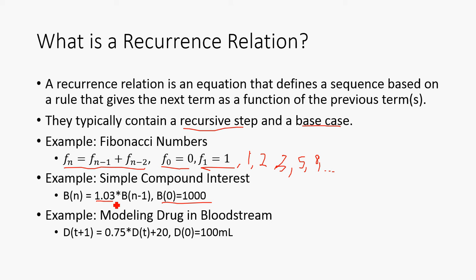And then our rule for simple compounding interest would be B_n = 1.03 * B_(n-1). In other words, the next payment is going to be 3% higher than the previous one. Simple enough.